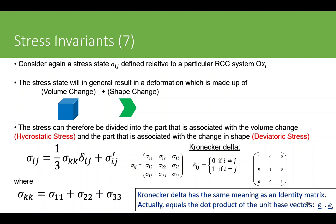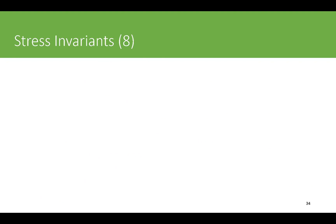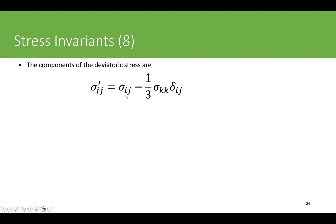To summarize: the stress tensor comprises two components — the hydrostatic stress, which changes the volume, and the deviatoric stress, which changes or distorts the shape. Since we know the actual stress state, we can compute the hydrostatic stress as (sigma_11 + sigma_22 + sigma_33)/3 times the identity matrix. Subtracting this hydrostatic part from the actual stress tensor gives us the deviatoric stress tensor, which governs shape change.